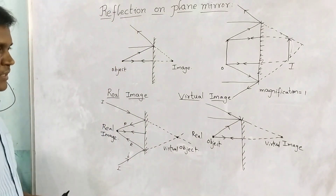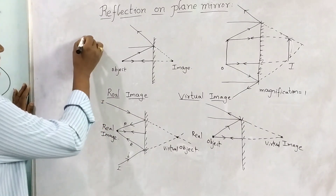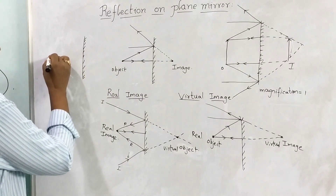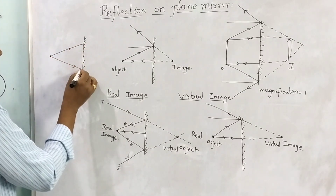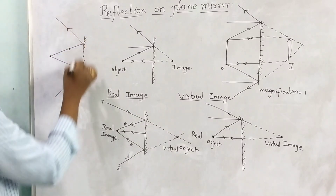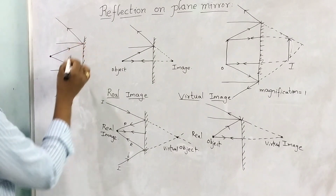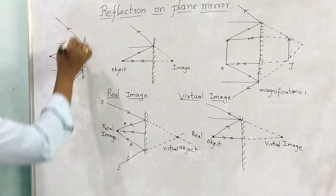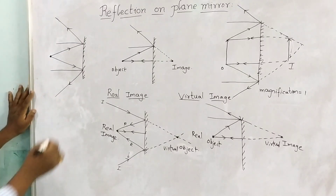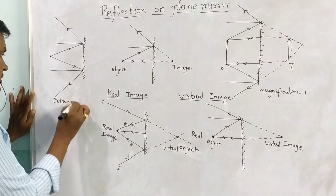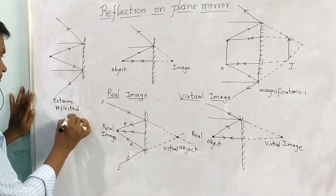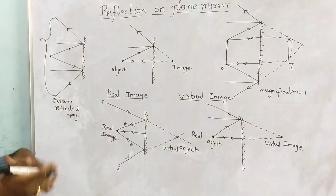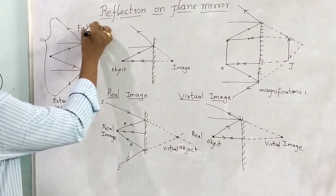Next, consider the field of view. Here is a plane mirror and an object. Rays from the object are incident on the mirror and reflect back, with the angle of incidence equal to the angle of reflection. If you consider the extreme reflected rays, the region between these two extreme reflected rays is called the field of view.